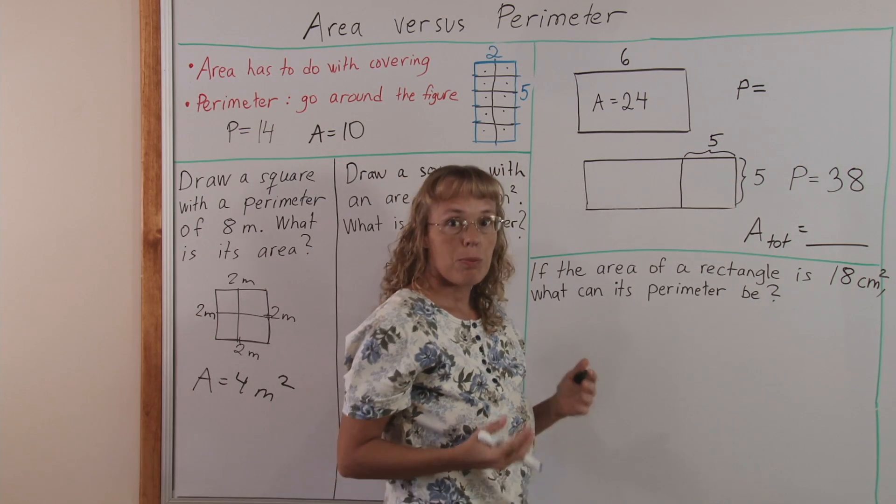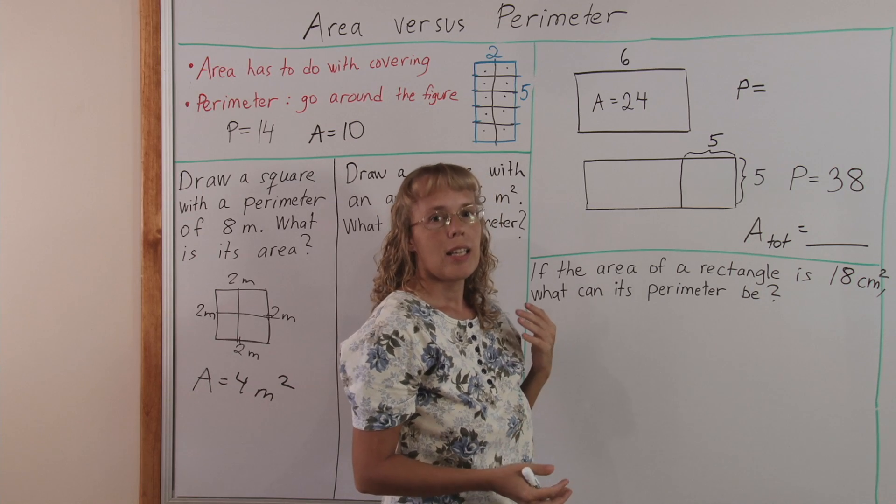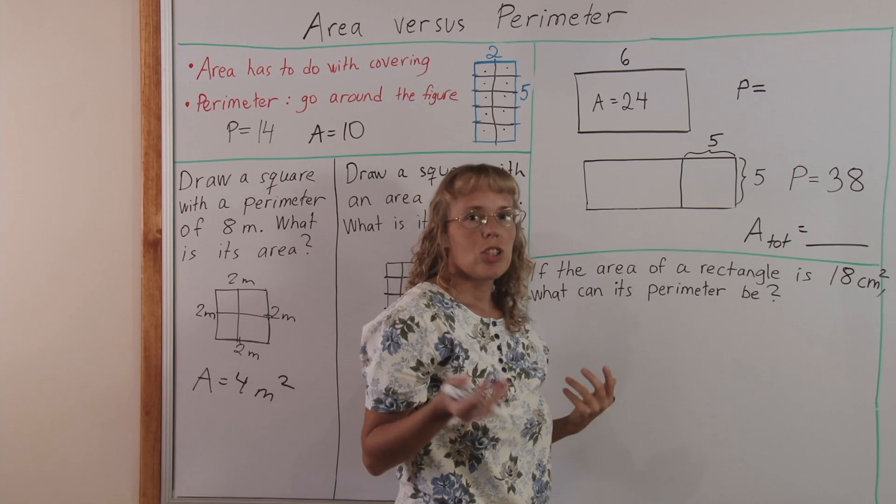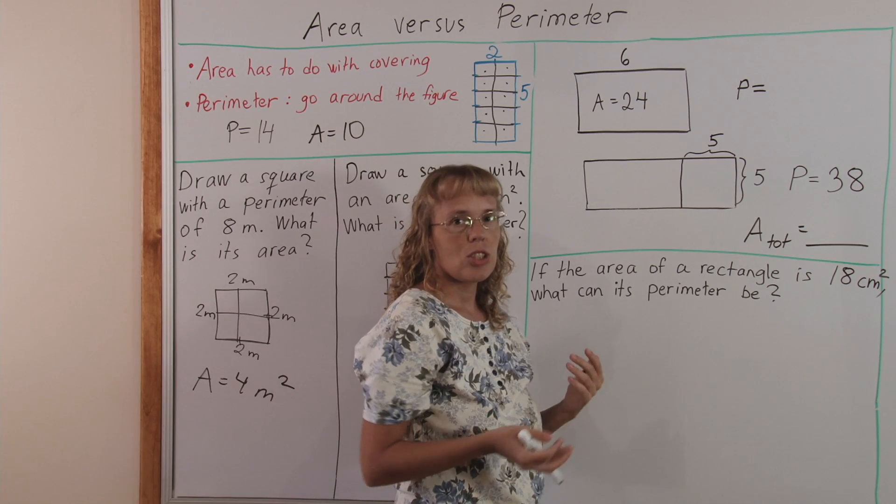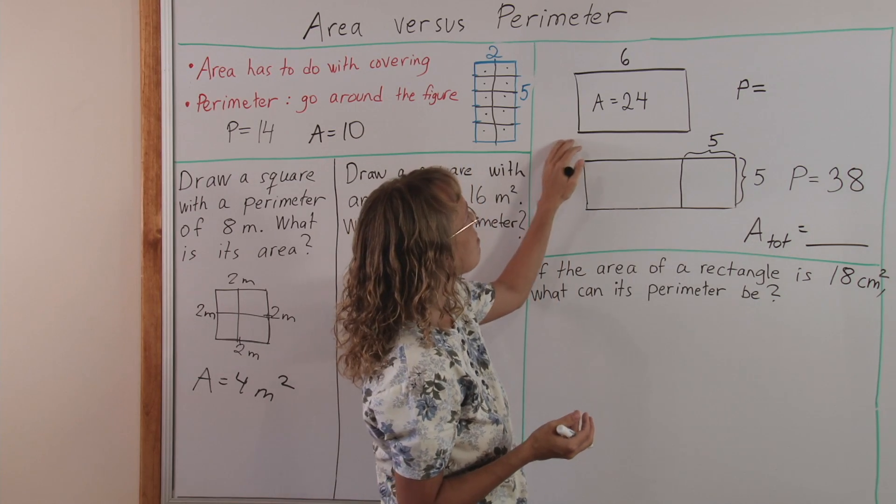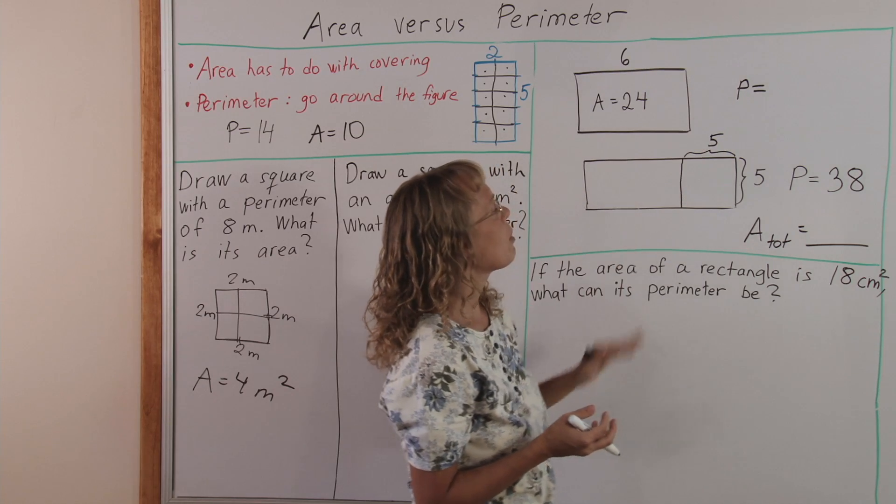This could be a word problem, where it just says that the area of a rectangle is twenty-four square inches, and one side is six inches, and what is its perimeter? It could all be in words, but I just made a sketch, and it is kind of like a problem in itself.